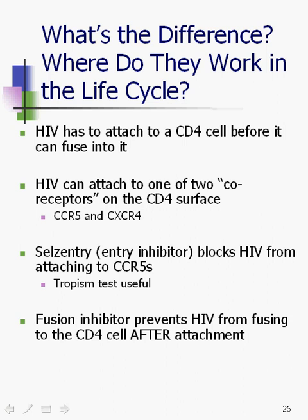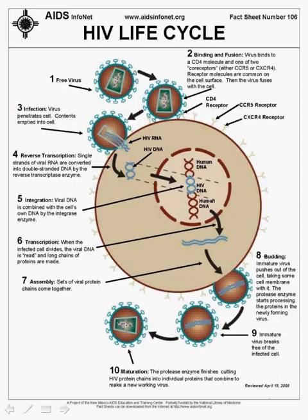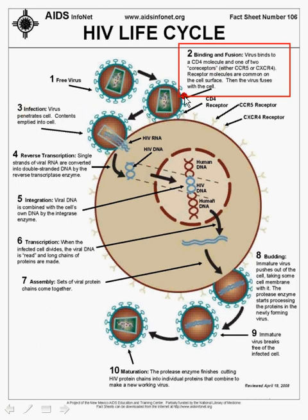The fusion inhibitor prevents HIV from fusing into the CD4 cell after it's already attached. Both attachment and fusion inhibitors work at step two of the life cycle — binding and fusion — where HIV binds to the CD4 molecule and then fuses into it. Both of those meds work before the virus has even gotten inside the CD4 cell.